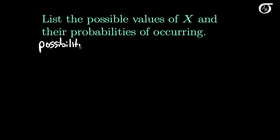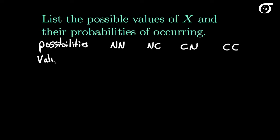Let's list the possible values of X and their probabilities. The possible outcomes are: both people are not under correctional supervision (N, N); the first is not but the second is (N, C); the first is but the second is not (C, N); and both are under correctional supervision (C, C). The value of X — the number of people under correctional supervision — takes on the value 0, 1, 1, and 2 for these four outcomes respectively.